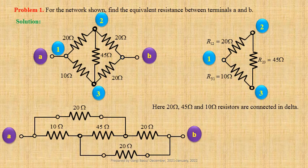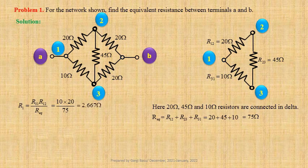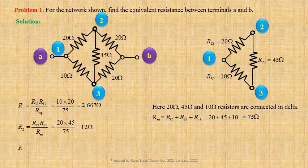Let us calculate Req equals R12 plus R23 plus R31. Using values we get 20 plus 45 plus 10 equals 75 ohm. We know R1 equals R31 times R12 divided by Req; using values we get 10 times 20 divided by 75 equals 2.667 ohm. R2 equals R12 times R23 divided by Req; using values we get 20 times 45 divided by 75 equals 12 ohm. R3 equals R23 times R31 divided by Req; using values we get 45 times 10 divided by 75 equals 6 ohm.